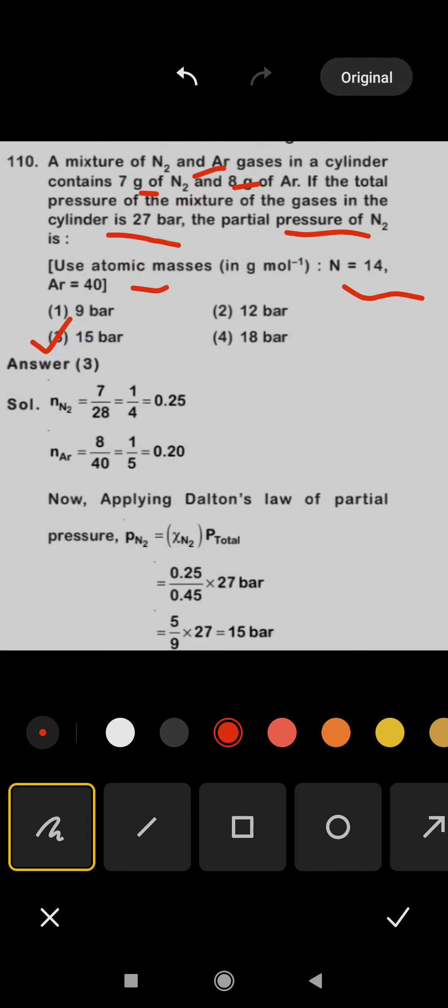For nitrogen, we have 7 divided by 28 equals 0.25, and for argon we have 8 divided by 40. These are the number of moles: given mass upon molecular mass.